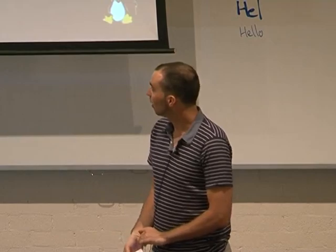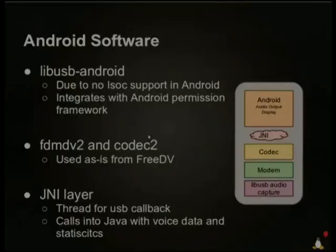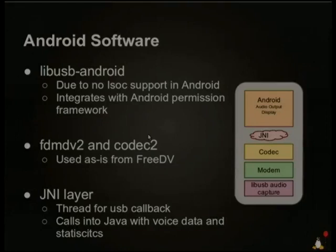So, integrating with the permission framework there. The next two blocks — the green and the yellow, the codec and the modem — were used as-is from 3DV. Just copied the functions over and got them building in the Android build environment, and off they went. So that was easy. The JNI layer was the complicated part. There are lots of buffers being thrown around — buffers coming from the USB audio fitting into the modem. The modem also produces a bunch of statistics on how the channel's operating, and I wanted to feed that over to the Java side so I could display it on screen.